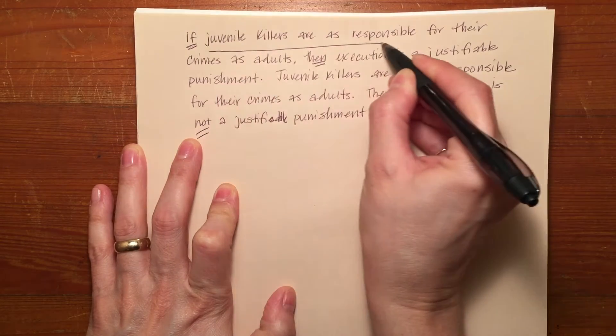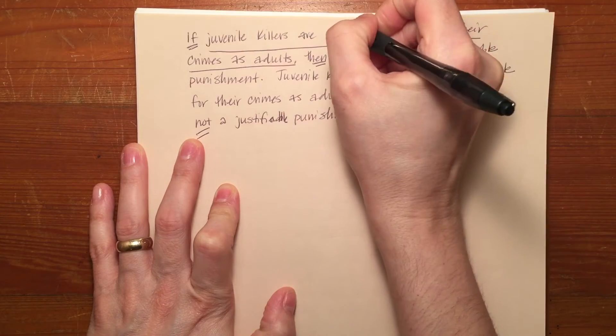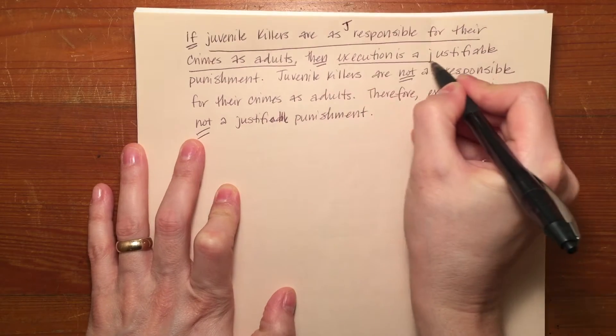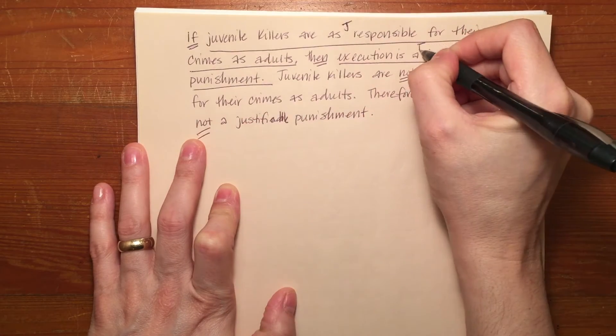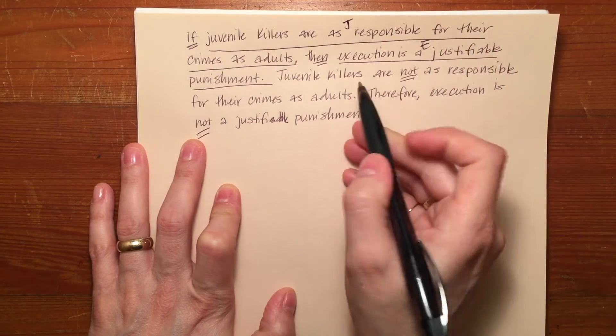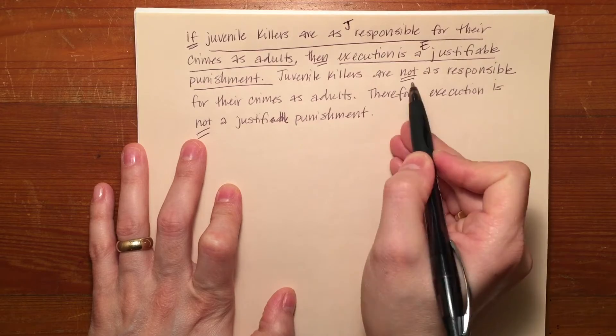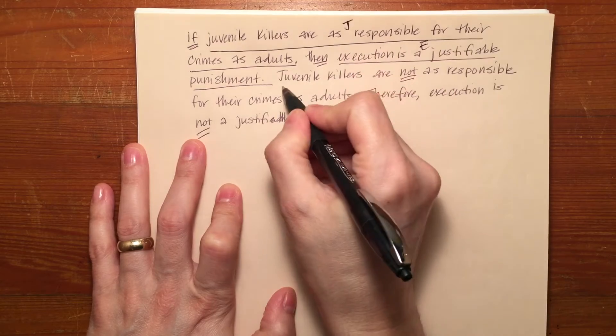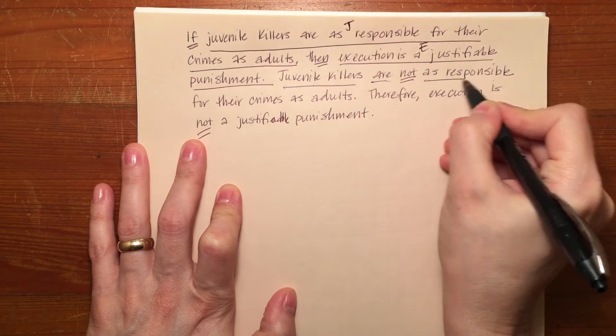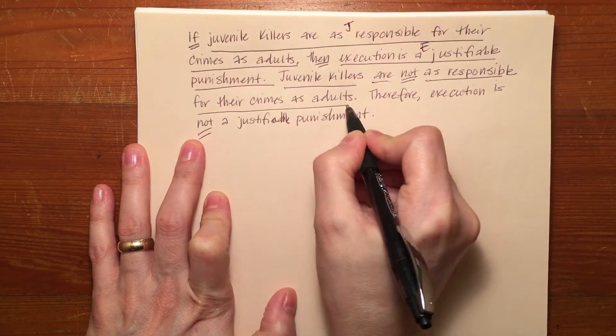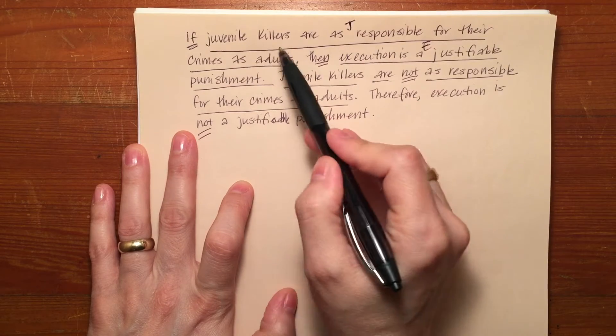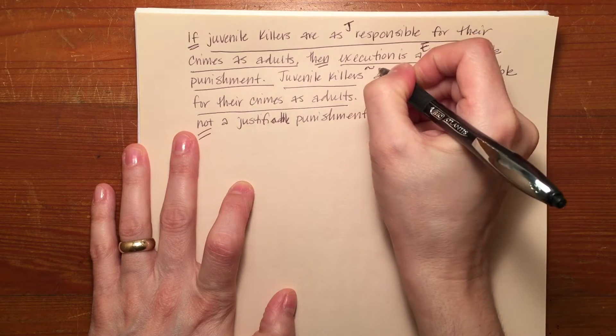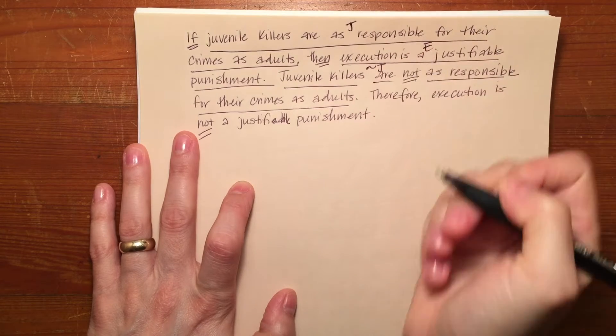In between those, I've got juvenile killers are as responsible for their crimes as adults. I'm going to use J to represent that. Then execution is a justifiable punishment, E. My next statement says juvenile killers are not as responsible for their crimes as adults, so that's a negation of J. Whereas before it said juvenile killers are as responsible, now we're going to say this is tilde J.